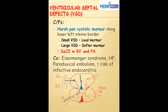During systole, when the ventricles contract, more blood is shunted through the defect. The murmur heard in this patient is a harsh pansystolic murmur, heard best at the lower left sternal border. In a patient with VSD, during systole, blood is shunted into the right ventricle, producing the harsh pansystolic murmur. We also see increased oxygen saturation in the right ventricle and in the pulmonary artery. One complication is Eisenmenger syndrome.